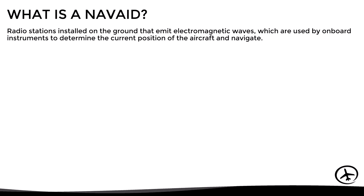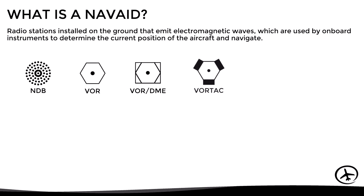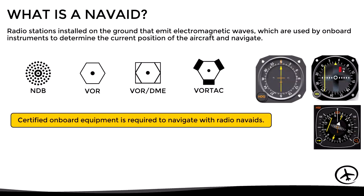There are several types of navades used in en route navigation, such as the NDB, the VOR, the VORDME, and the VORTAC. Each one of these navades has different characteristics and capabilities, but we will not get into detail with this in this video. However, we have to mention that in order to use these navades, certified onboard equipment is required for IFR flights.